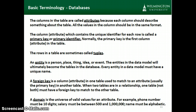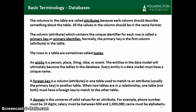By way of review, the columns in a database table are called attributes. One column, or a combination of columns, needs to be identified as the primary key. The rows in a database table are sometimes called tuples. An entity is a person, place, or thing, and in data modeling our entities will become our database tables. The foreign key is a column that matches one table to another by matching to the primary key in another table. The term domain means the universe of valid values — for instance, the domain for a U.S. phone number is a 10-digit number.